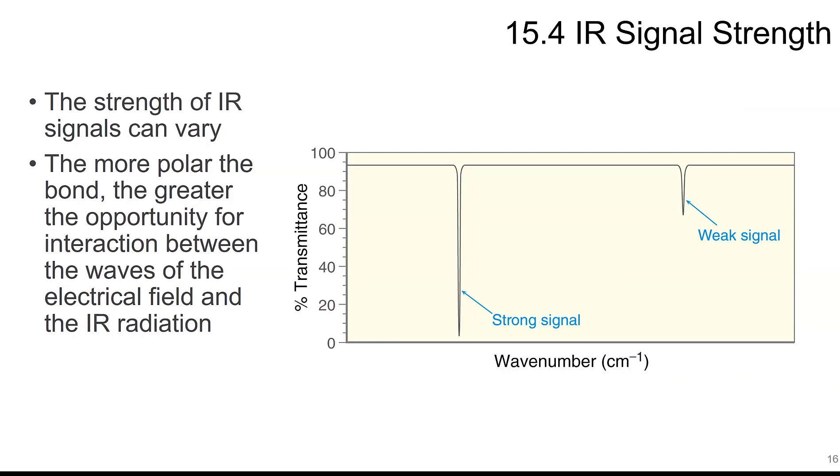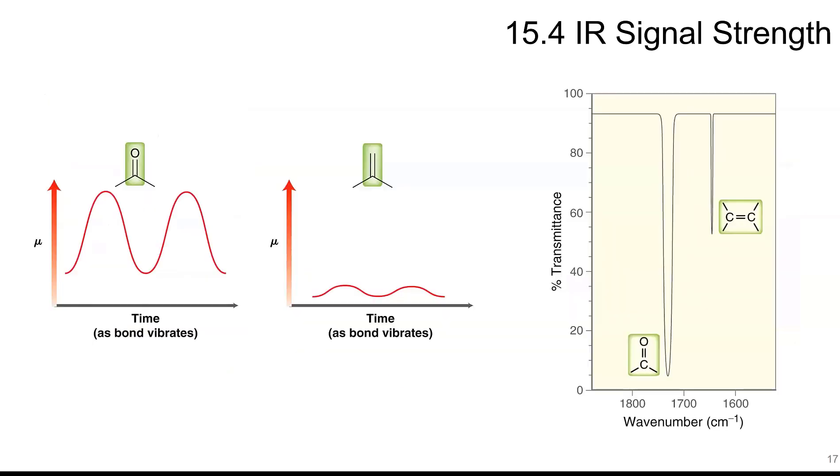So the signal strength we saw can vary. You can have a weak signal or you can have a strong signal. The more polar the bond, the greater the opportunity for interaction of those things. So more polar equals strong signal. So signal strength as time passes here, the bond can vibrate some more. And then as it vibrates, you have this very polar CO bond versus this one here, even though it's vibrating, there's not much difference between the polarities here. So there's greater signal with the CO bond versus the CC double bond.